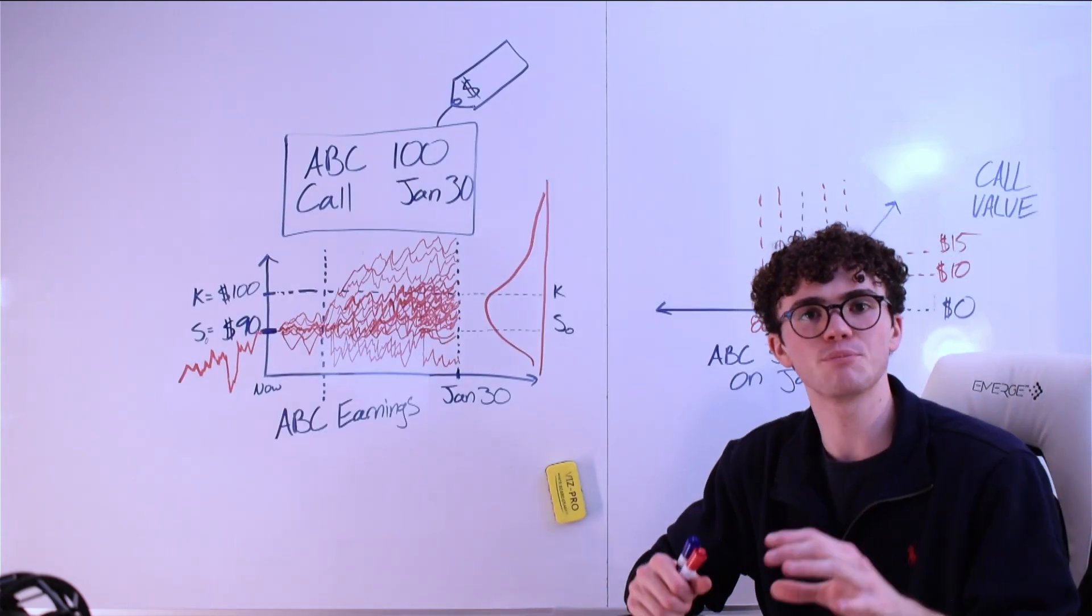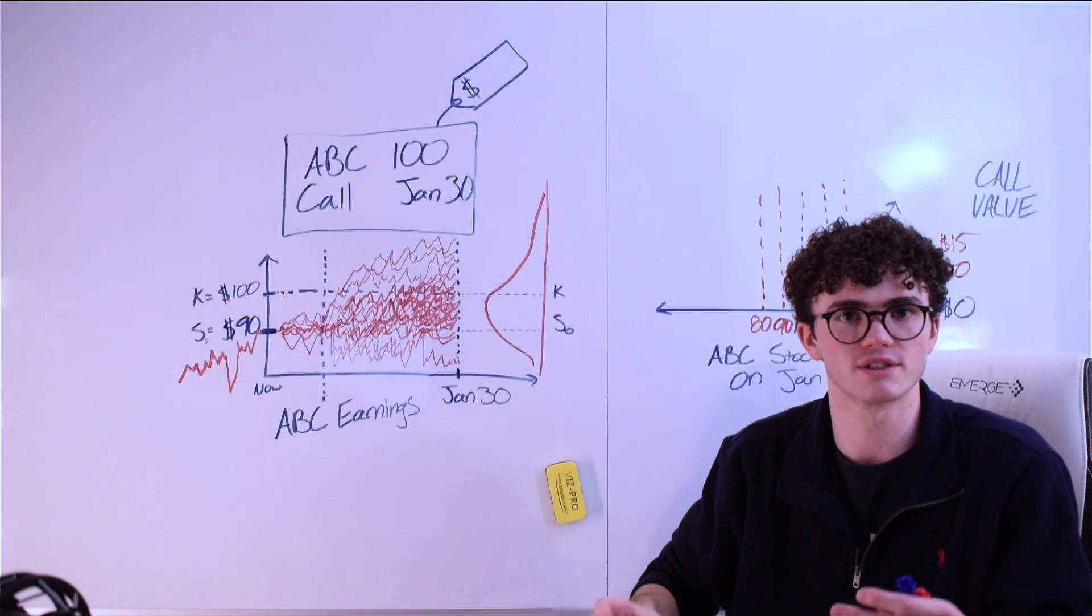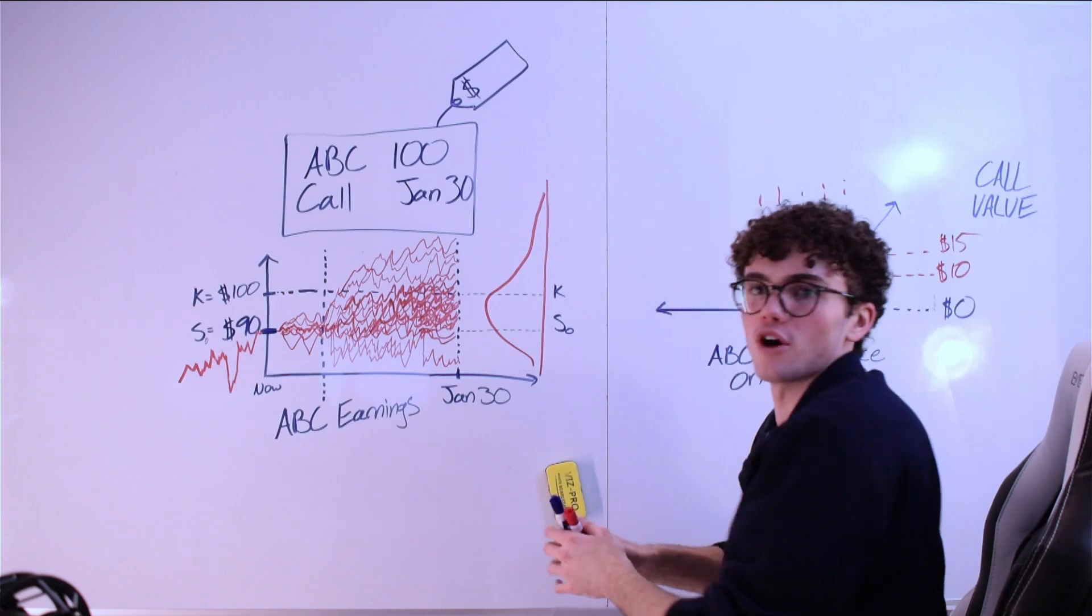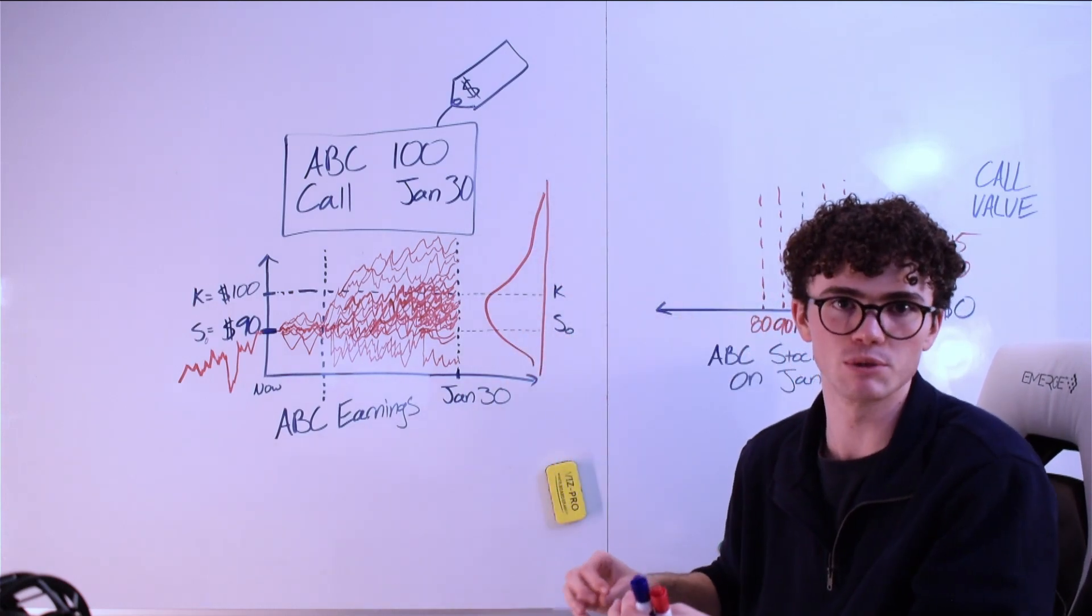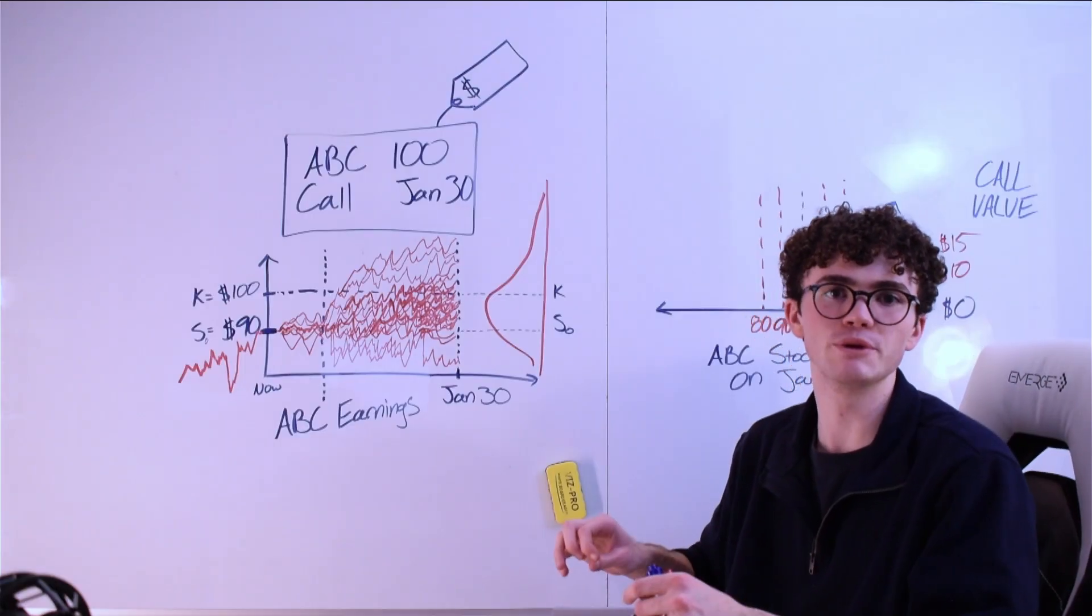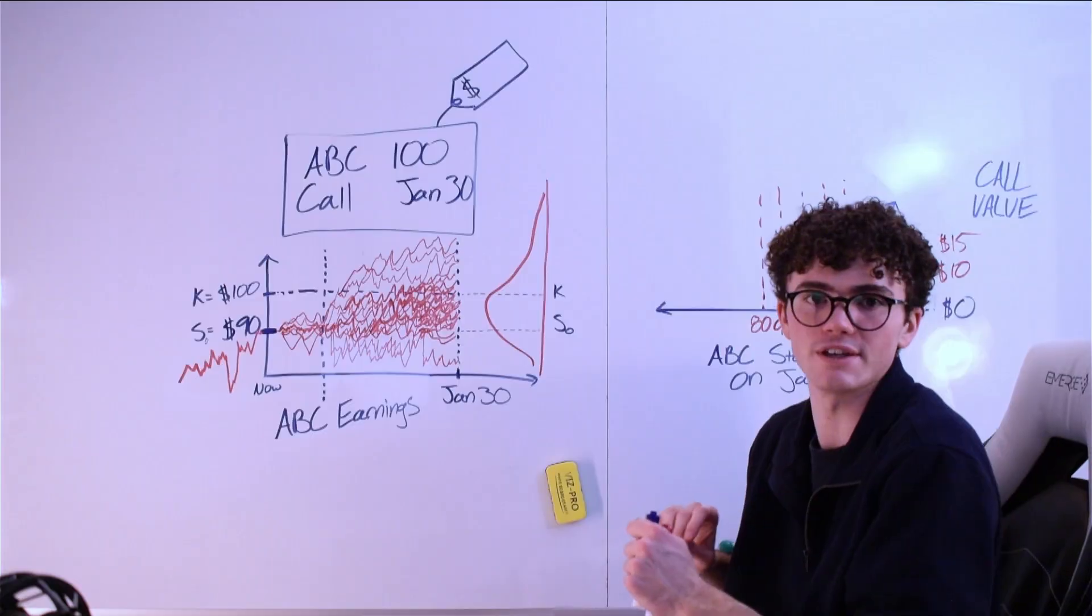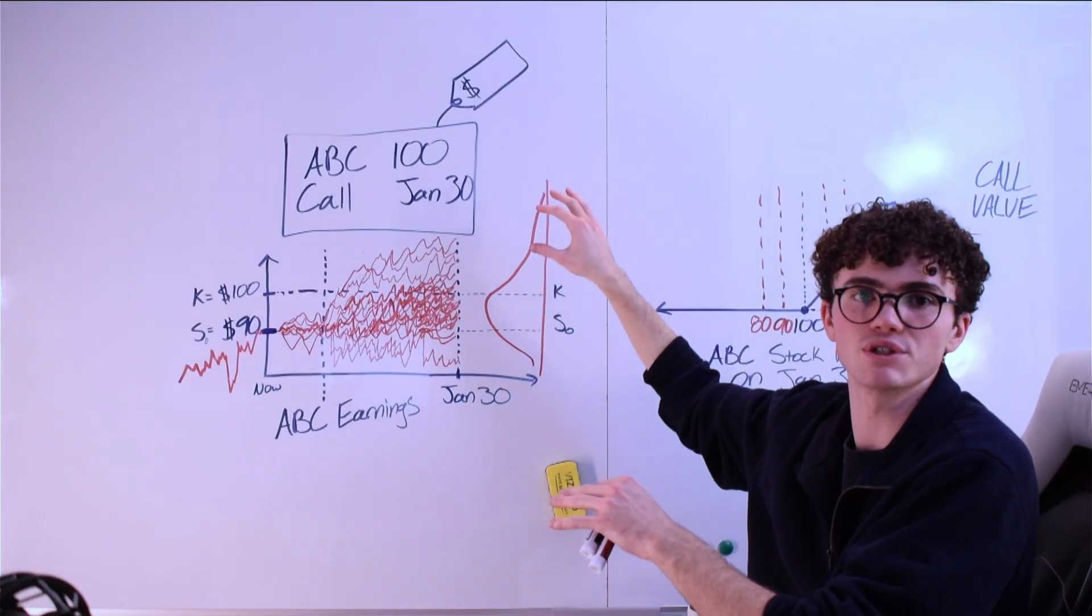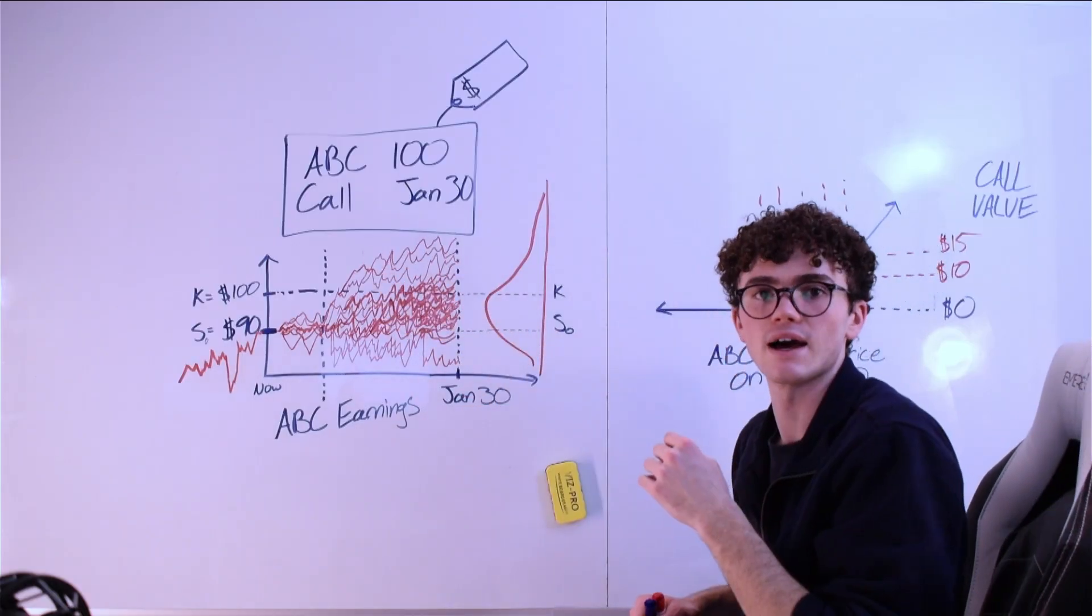The fair value of an option is fundamentally driven by this, the distribution of future prices of the underlying asset. In this example, imagine we have ABC earnings early on. So we might get a more dispersed distribution of future prices of ABC. We think it's most probable for ABC to beat earnings by a large margin. That's why we have this fat tail to the upside because we think most of the extreme events for ABC lie to the upside. And maybe according to our models, the most probable future outcome for ABC is something like $99.